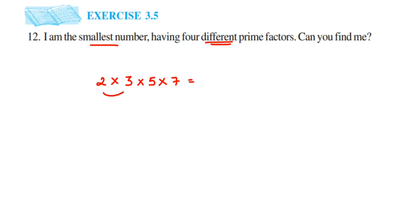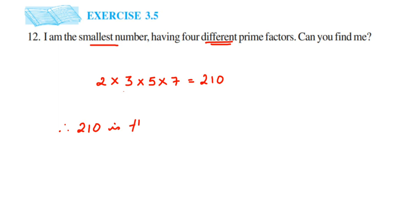Now let's multiply: 2 × 3 = 6, 6 × 5 = 30, 30 × 7 = 210. So 210 is the smallest number they're talking about. Therefore, 210 is the required number. We took the four smallest prime numbers and multiplied them together.